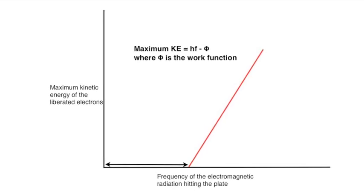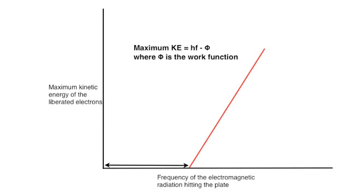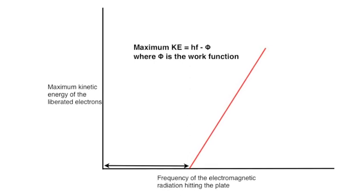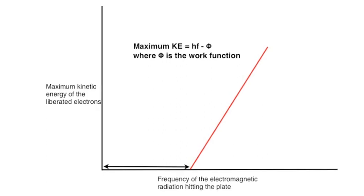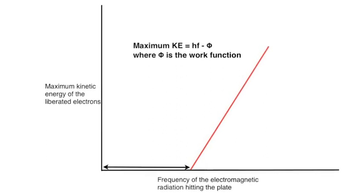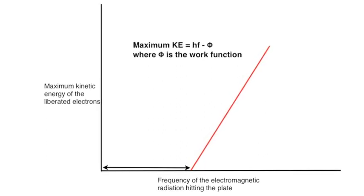The maximum kinetic energy of the electron is equal to HF, which is the energy of the photon, minus phi, which is the work function. The work function phi is the energy required to lift the electron off the surface.